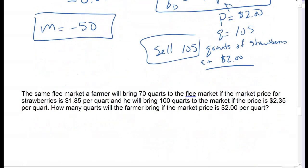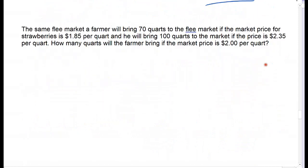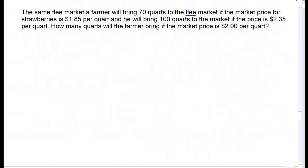The next question is the same farmer's market, but now we're doing the supply side. This one actually says the word supply, so it's a little easier to tell. Also, the slope should come out positive—and that's another tell that it's the supply case.